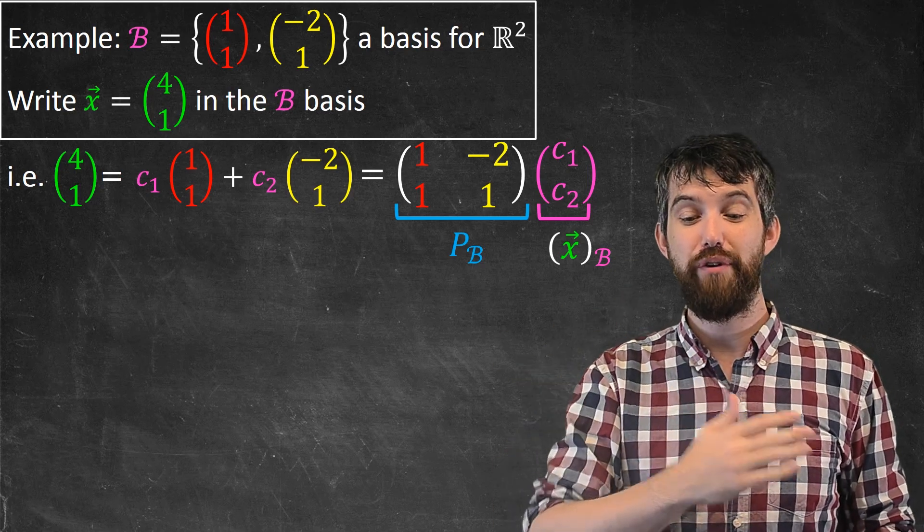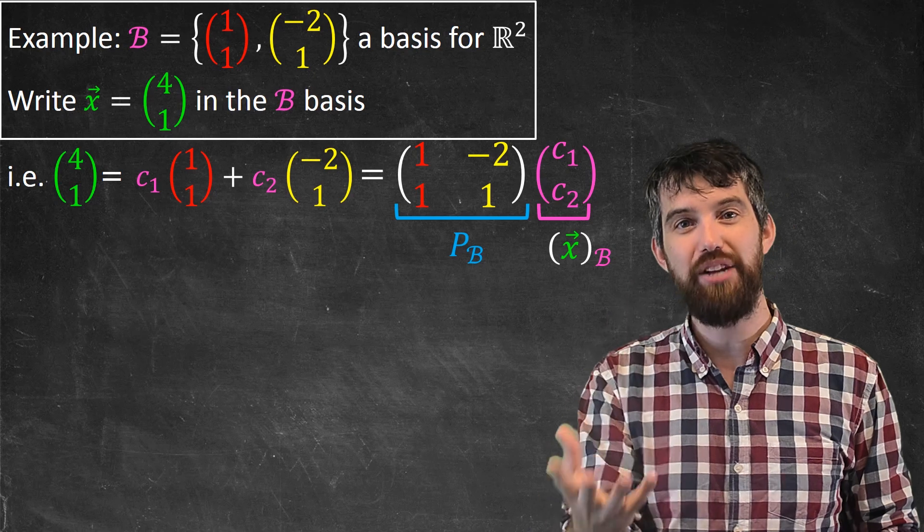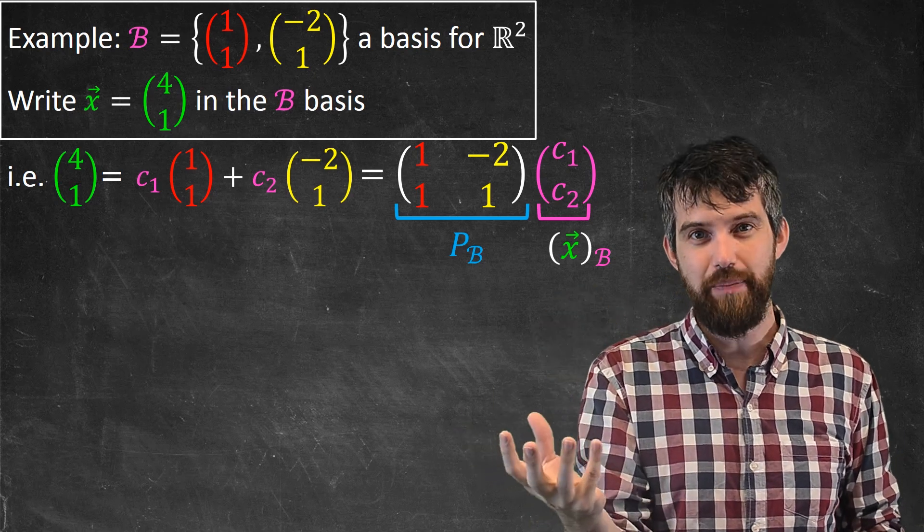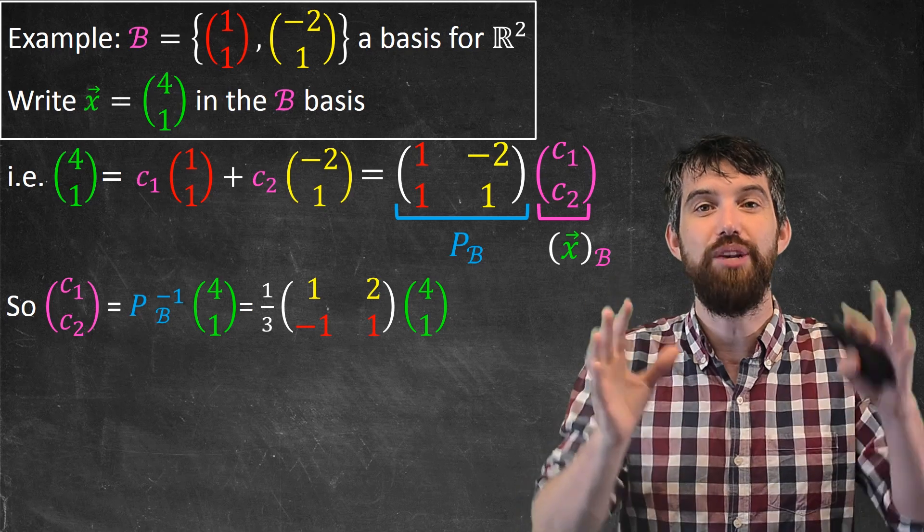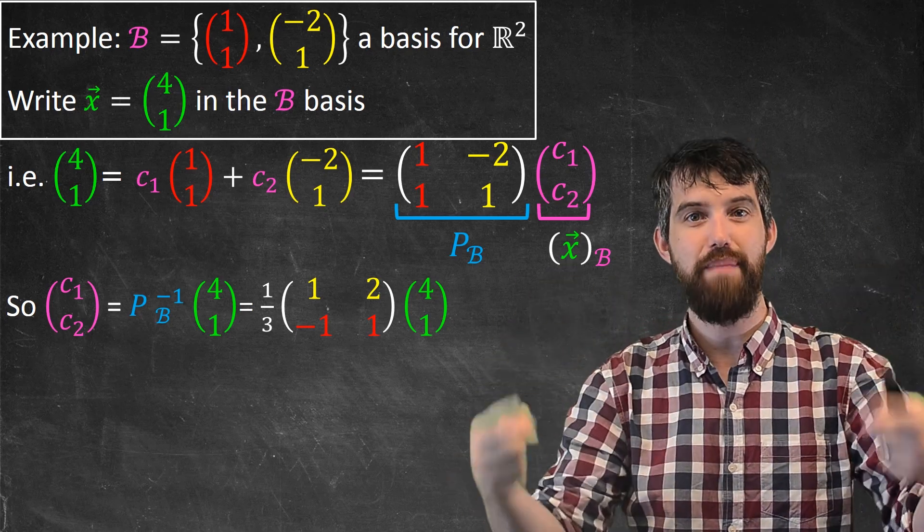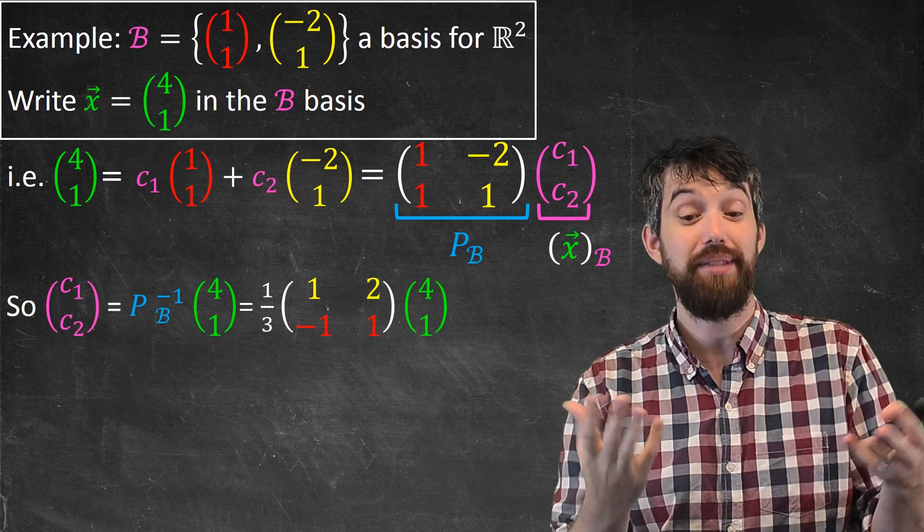So I can go and reverse this process. I've got, right now, x is equal to a matrix times the vector x written in the B basis. I can invert it, and what I'm going to get is this. I'm going to get that the c_1, c_2 is the inverse of that matrix times x.